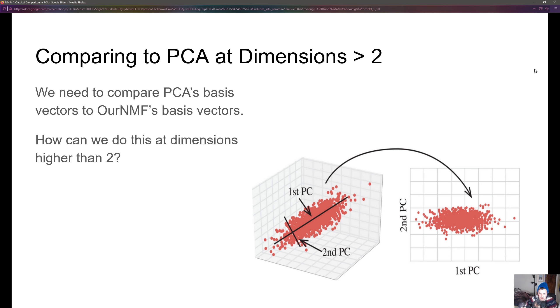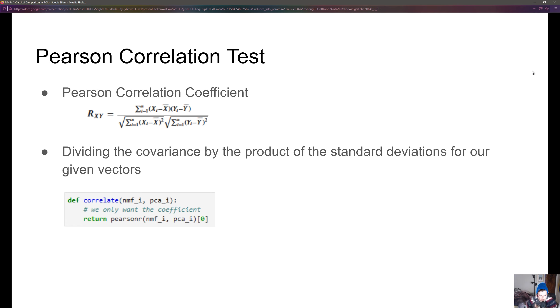What we can use is called a correlation test or more specifically a Pearson correlation test. The Pearson correlation test divides the covariance by the product of the standard deviations for our given vectors.